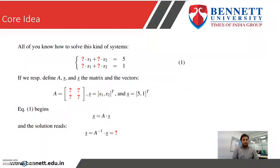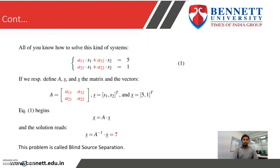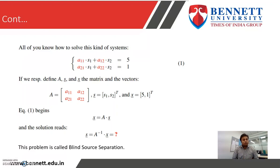We get that the transpose of s is equal to A-inverse multiplied by the transpose of x. The process of finding s, or the process of finding the transpose of s, this problem is known as blind source separation.